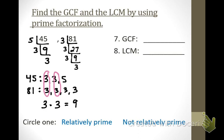Is that the GCF or the LCM? Remember: GCF is a factor — factors fit into numbers. LCM is multiples — multiples get bigger. Is 9 bigger than the original numbers or does it fit into them? 9 fits into them, so 9 is the GCF. The key difference between GCF and LCM is you have to do something with your leftovers — we didn't touch the leftovers on this one.